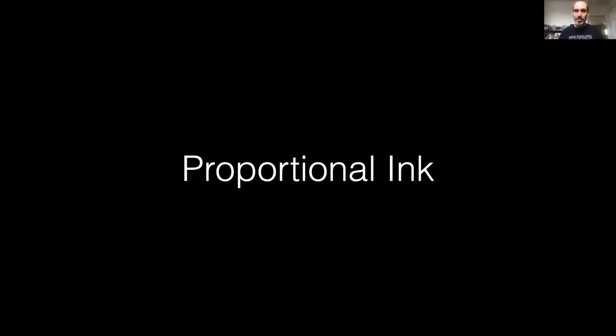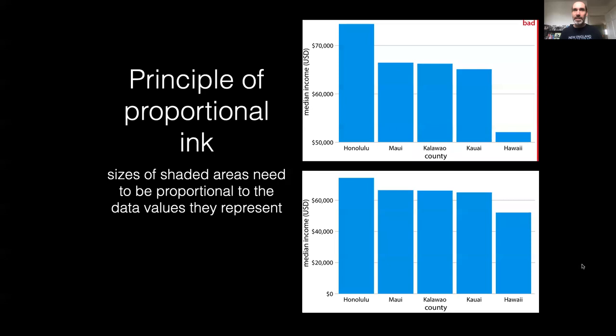Welcome back to this series of videos on data visualization principles. This video is going to talk about the principle of proportional ink, which basically states that the size of shaded areas should be proportional to the data values they represent.